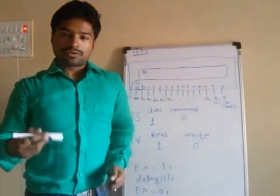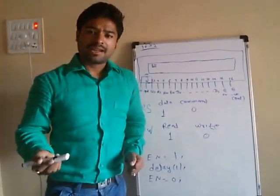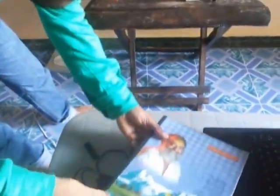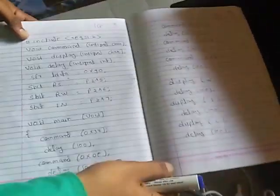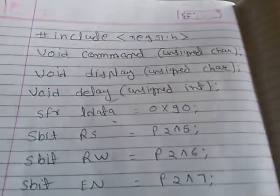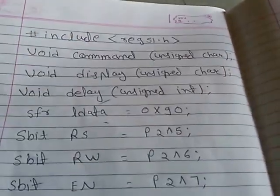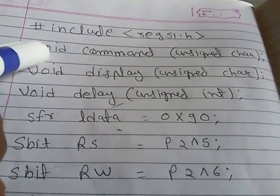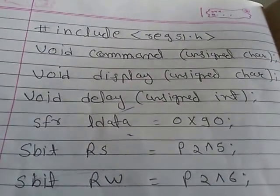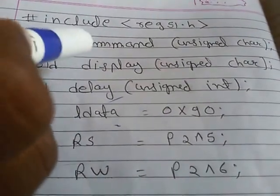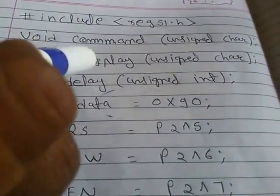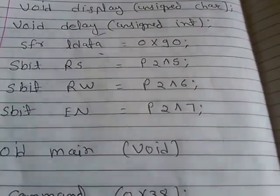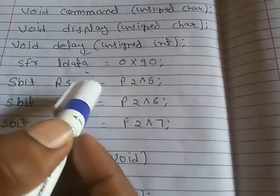Now we move to the second step. The second step is very important — to interface any component with a microcontroller, we need a program. We will see the basic program for LCD interfacing. First, we include the header file reg51.h. This program is written in Embedded C, a high-level language. We then define three functions: write_command, write_display, and write_delay. The write_command function is used to send commands to the LCD, write_display is used to send data, and write_delay generates a delay.